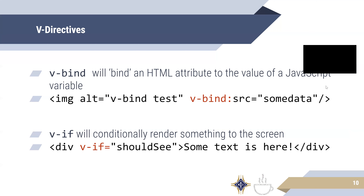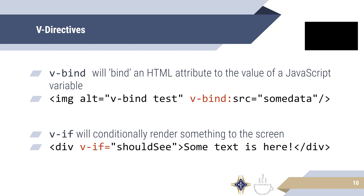Let's take a look at some of the V directives from last time. First, VBind. VBind will bind an HTML attribute to the value of a JS variable. Take a look at this syntax example — VBind is binding this SRC attribute to the variable 'some data', meaning SRC is going to be equal to whatever information is stored in some data.